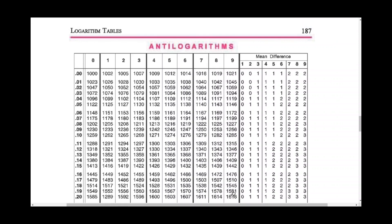Now we have opened the anti-logarithm table. Here also there are three parts. The far left column starts from 0.00 and ends at 0.99. The middle column represents the third significant figure, and the mean difference column is for the fourth significant figure.